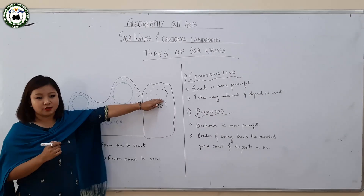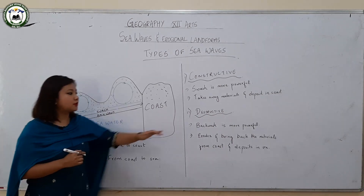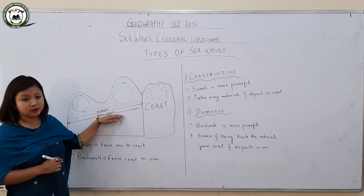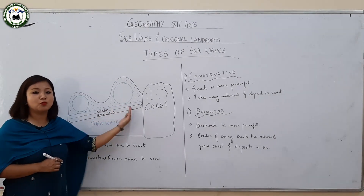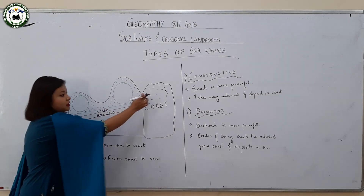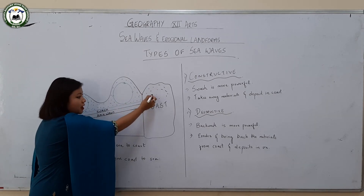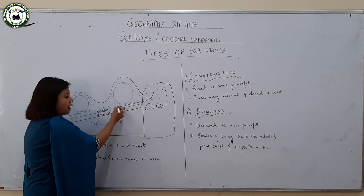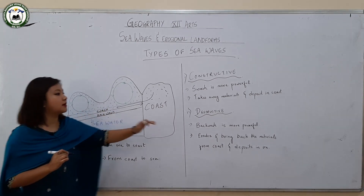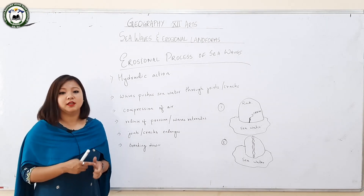Landforms are created through this process, and hence it is regarded as constructive sea waves. In destructive waves, the backwash is more powerful — the sea waves retreat more forcefully. The materials deposited by constructive sea waves are brought back and settled in the sea again, and hence it is regarded as destructive sea waves.